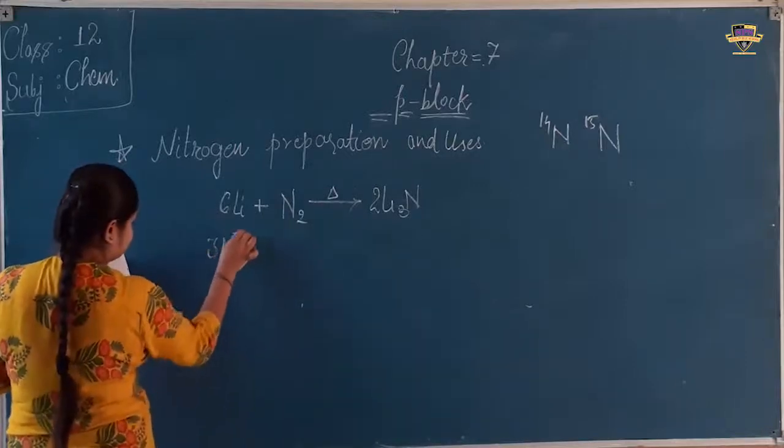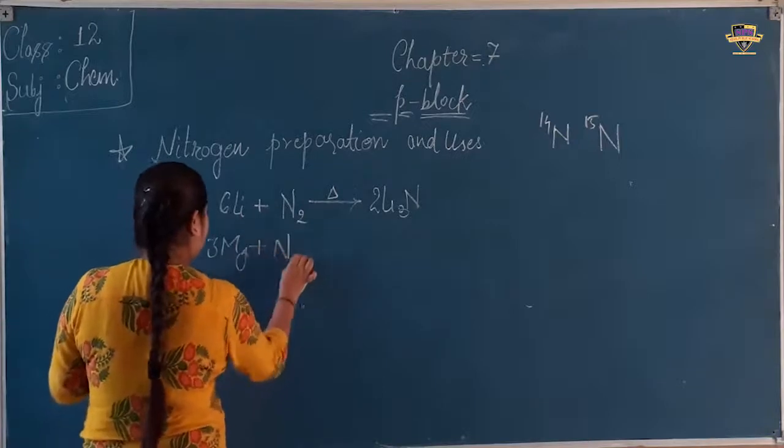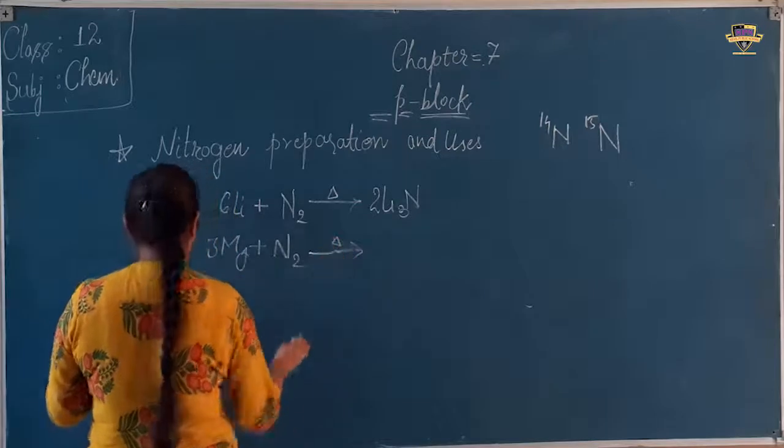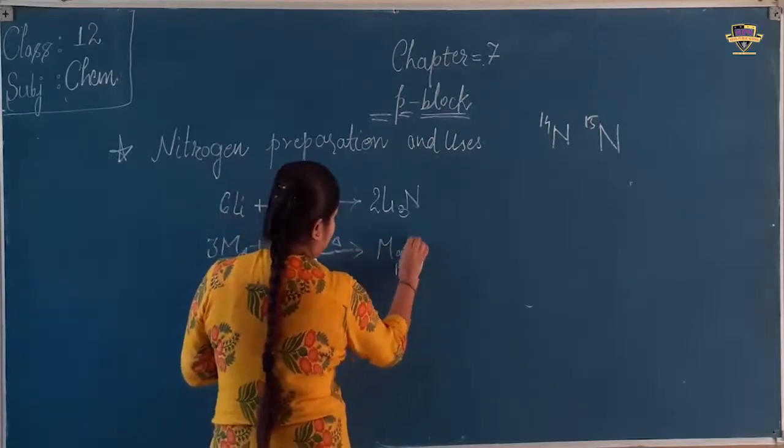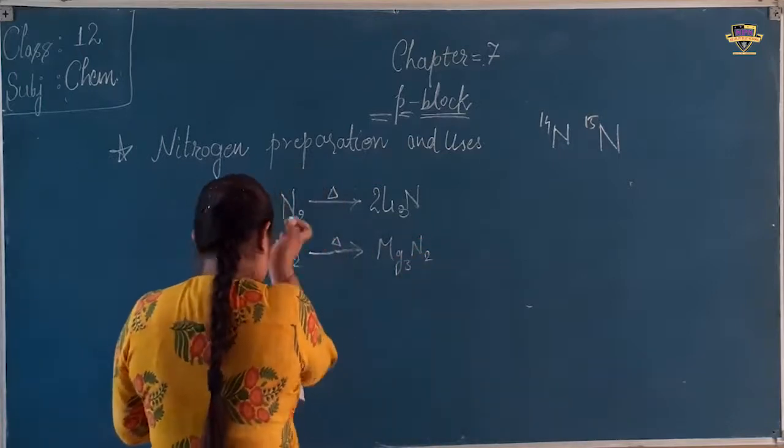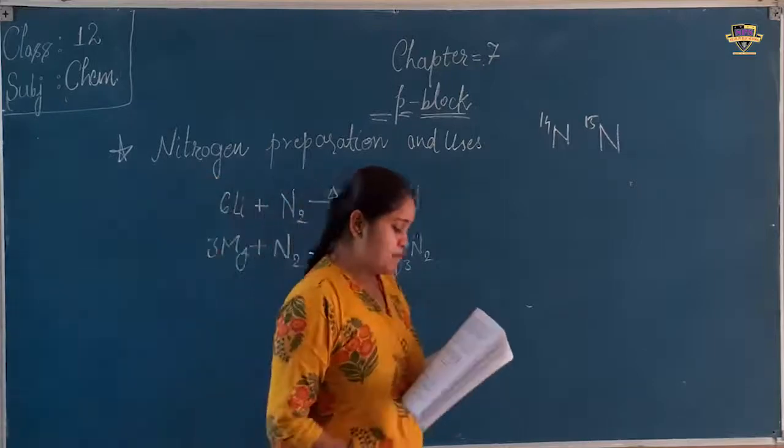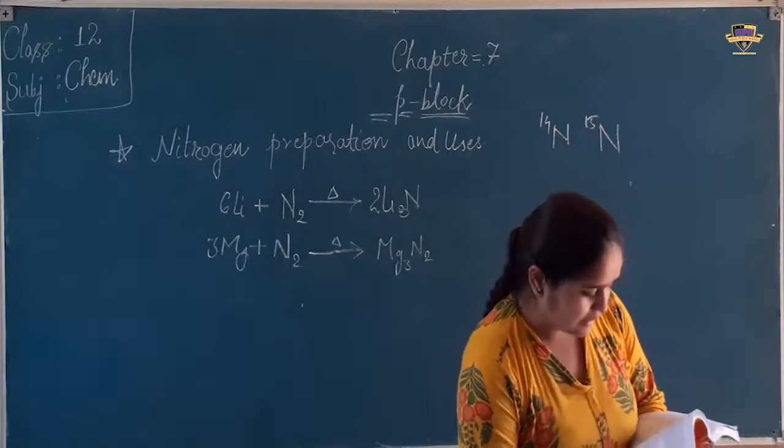Next, 3Mg plus N2 gives Mg3N2. And if it combines with hydrogen at a temperature of 773 Kelvin in the presence of catalyst in Haber process, it forms ammonia.